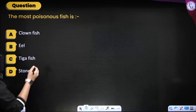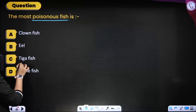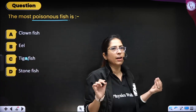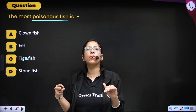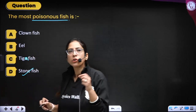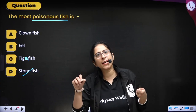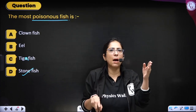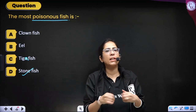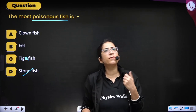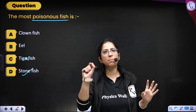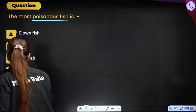Next question: the most poisonous fish is — clown fish, eel fish, tiger fish, or stone fish. The correct answer is stone fish. Always remember this. In Biology, most topics require understanding, but some things must be memorized — like stone fish being the most poisonous. Make short notes so that a day before the examination you can go through them. You can write it in your NCERT.